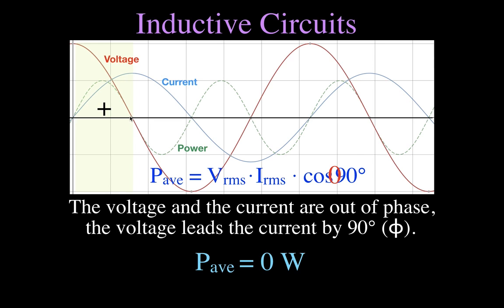For the next quarter cycle, the current is still positive but the voltage has moved into the negative area, so we have a negative voltage times a positive current, which results in a negative power. Then the cycle repeats: we have both a negative current and a negative voltage, and a negative times a negative is a positive, so we get a positive power.